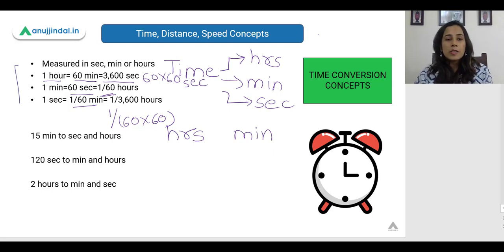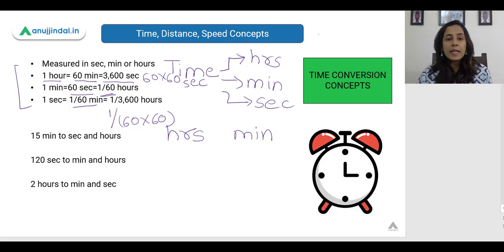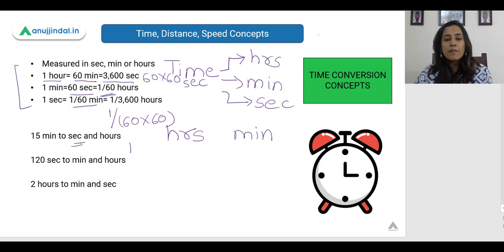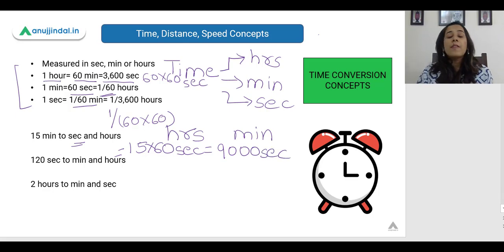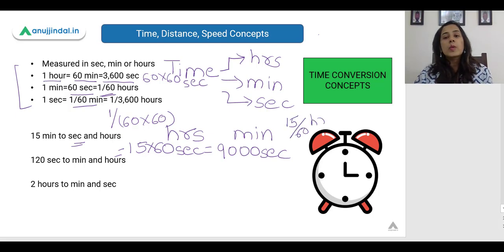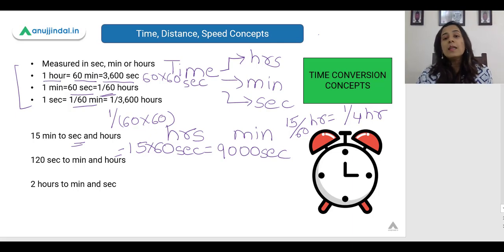So this is very important to know. You have to be thorough with your conversion — you need to know in which unit the question is asking you to find the answer. For a quick conversion: 15 minutes to seconds is 15 into 60, which is 900 seconds. If we want to convert into hours, we divide by 60 — so 15 divided by 60 gives 1/4 hour. So 15 minutes is 900 seconds or 0.25 hours.